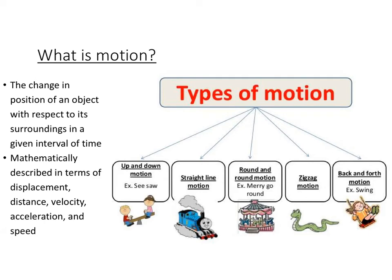Basically, motion is the change in position of an object with respect to its surroundings within a given time interval. We can describe that mathematically in terms of displacement, distance, velocity, acceleration, speed. So there are many different ways for us to describe motion.